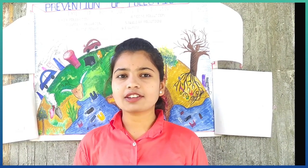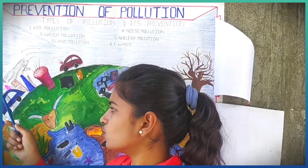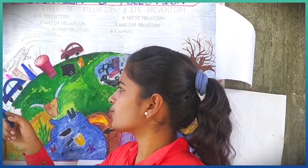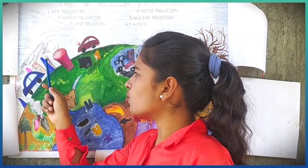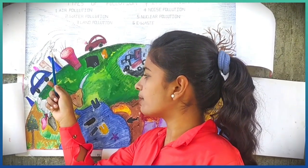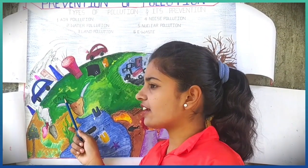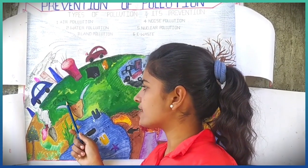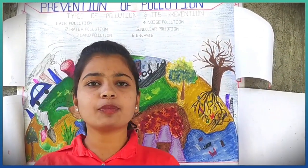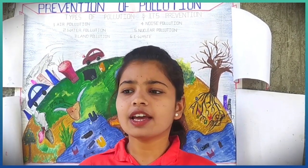First we will start with air pollution. Gases like O3, SO2, NO2, etc. cause air pollution. Whereas CFC and CO2 lead to global warming and ozone depletion. Fluorine, lead, and arsenic are the causes for death of animals. Even primary pollutants and secondary pollutants are the sources of air pollution.